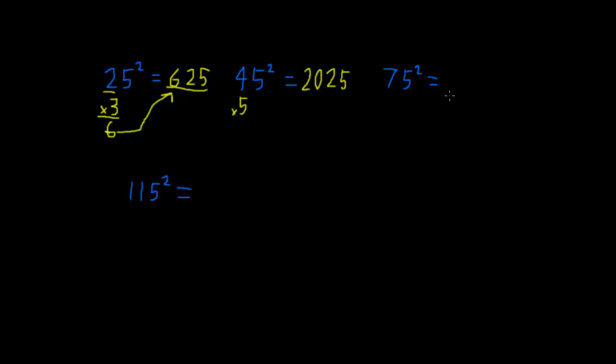75 squared. It would be 7 times 8, which is 56. And you put 25 on the end of it.